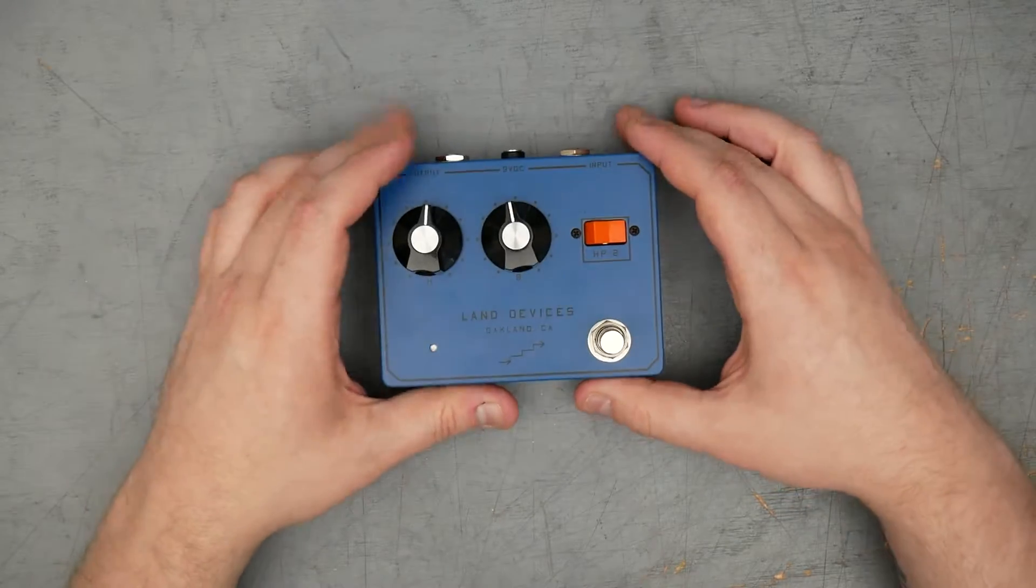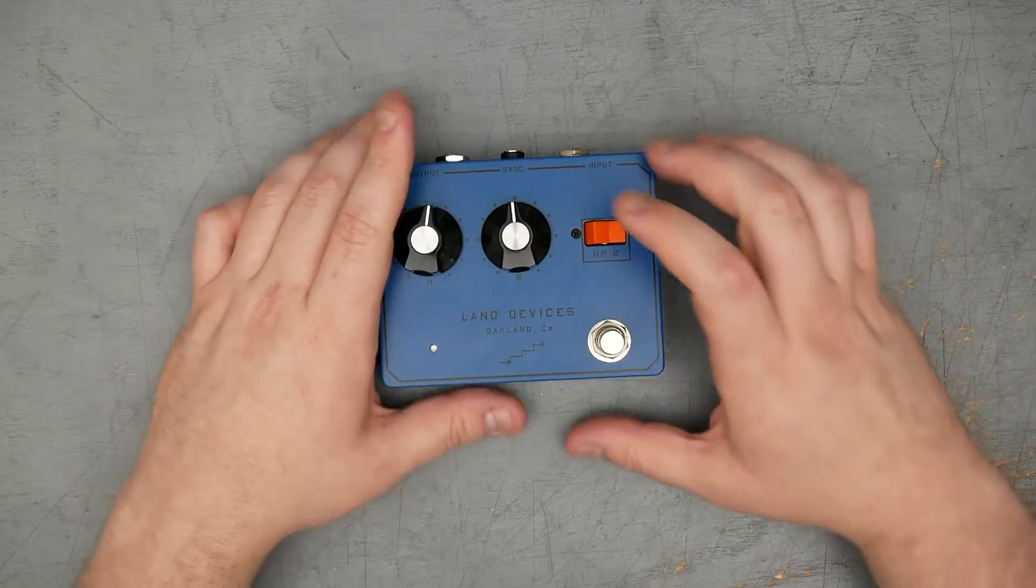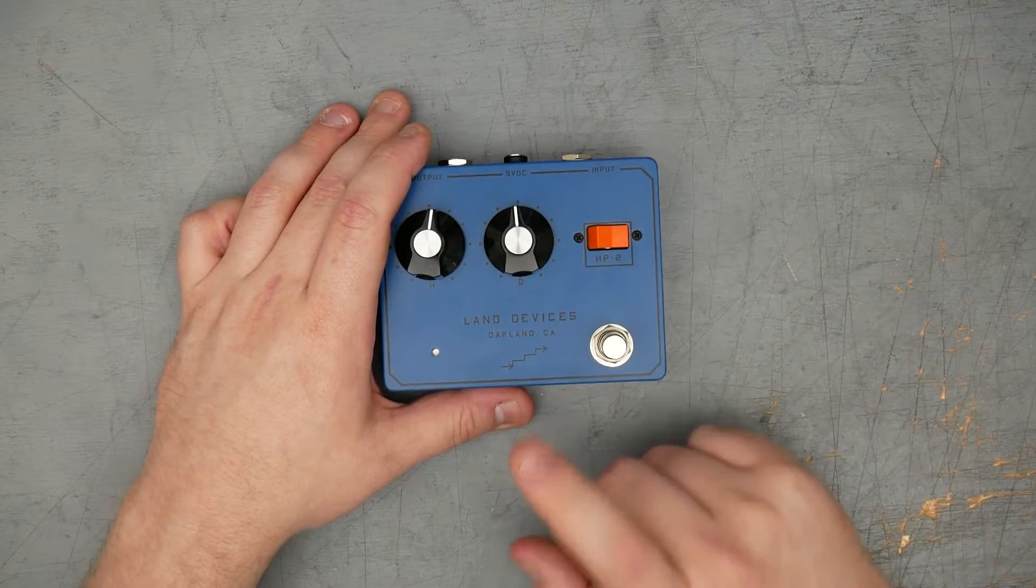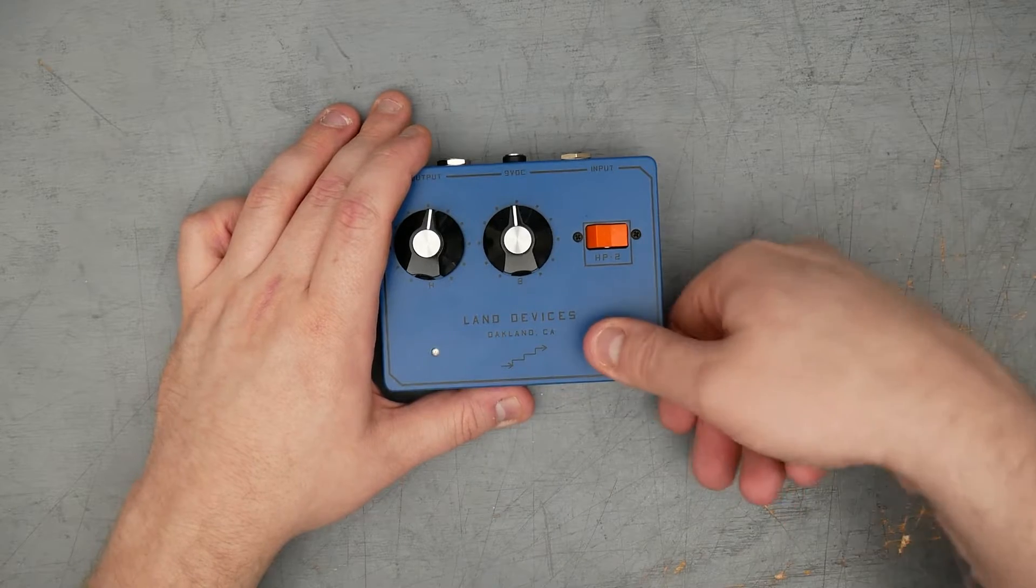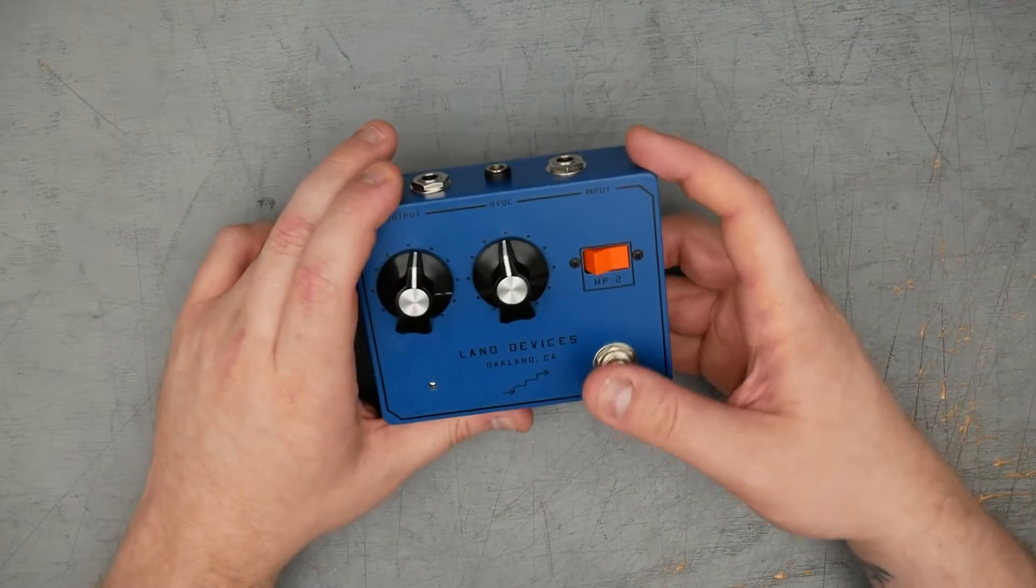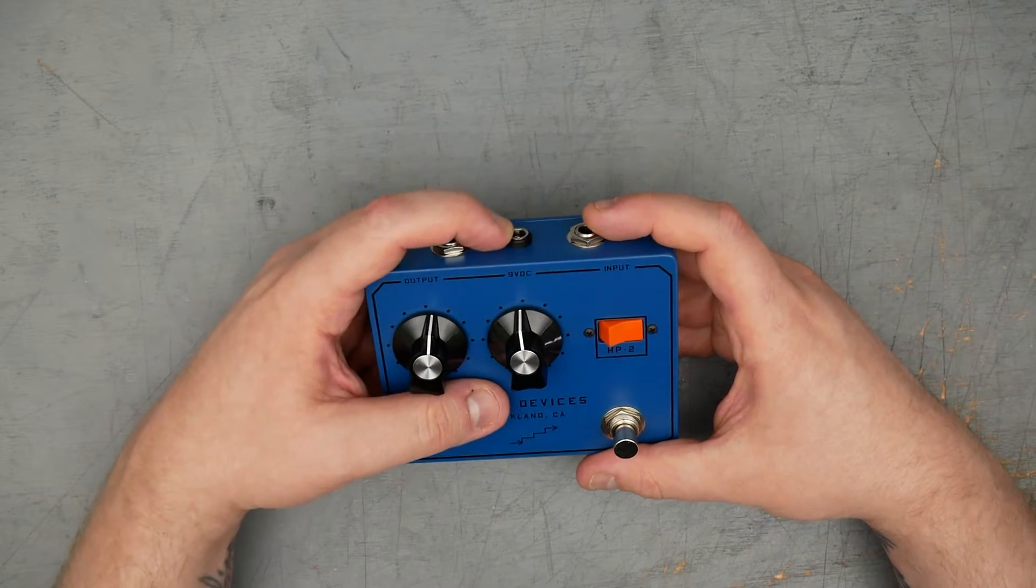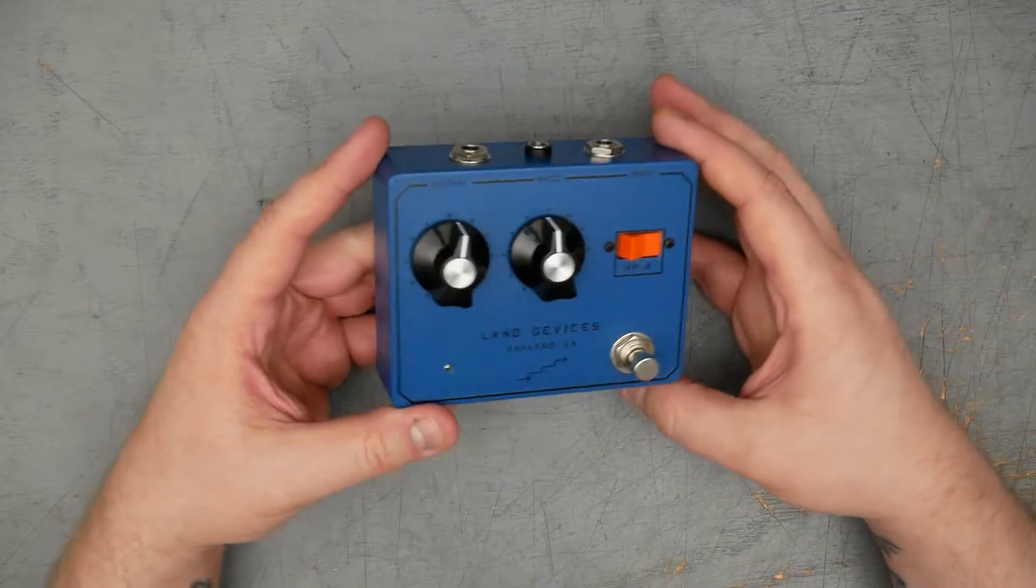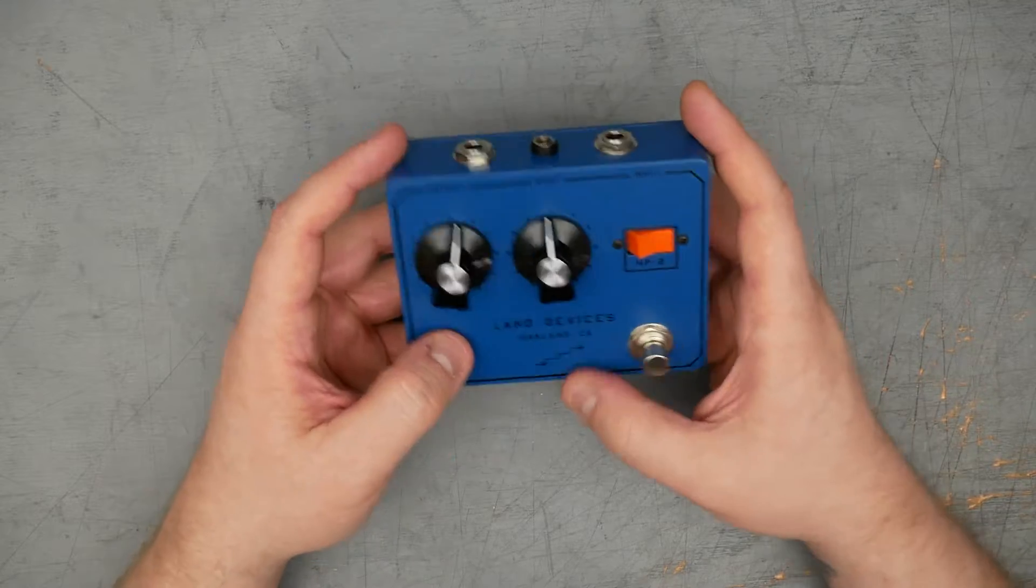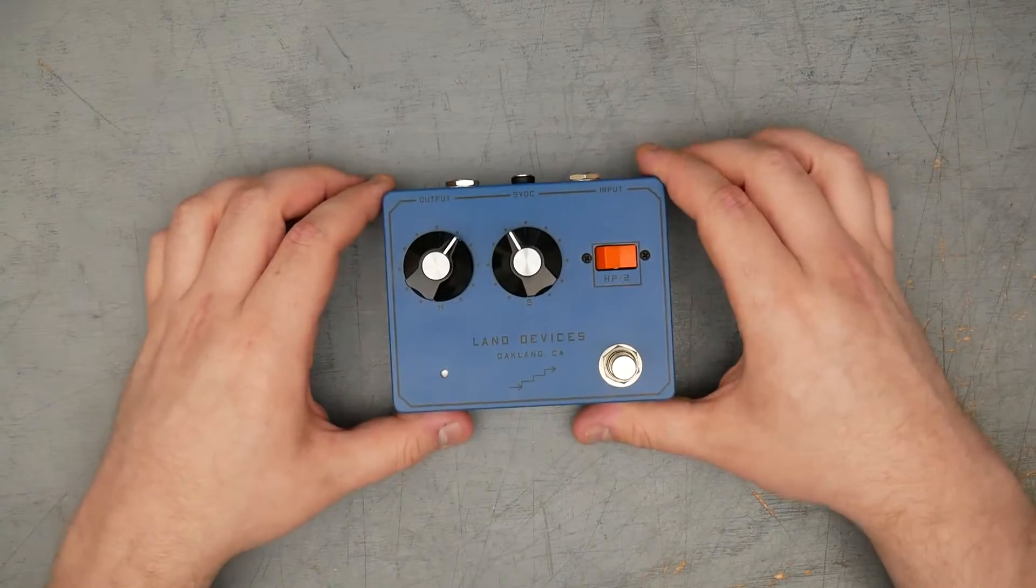As far as external controls, we have two rotary potentiometers here that are marked H and B, not sure what those stand for. We also have a switch here, a rocker switch that is labeled with the model number HP-2. Land Devices, Oakland, California, a little graphic here, sort of standard feeling latching foot switch, so probably not relay basis, probably just mechanical true bypass switching. Quarter-inch input and output jacks, top-mounted, 9-volt DC jack and non-switching Lumberg type. Enclosure size is a 1590BB, it's got sort of a matte blue powder coat, graphics are silkscreen on and black. Small little three millimeter LED over here in the corner. That is it for the externals, let's go ahead and crack open the pedal.